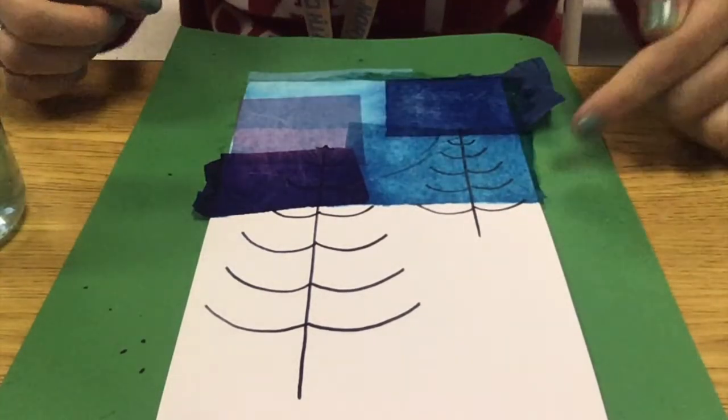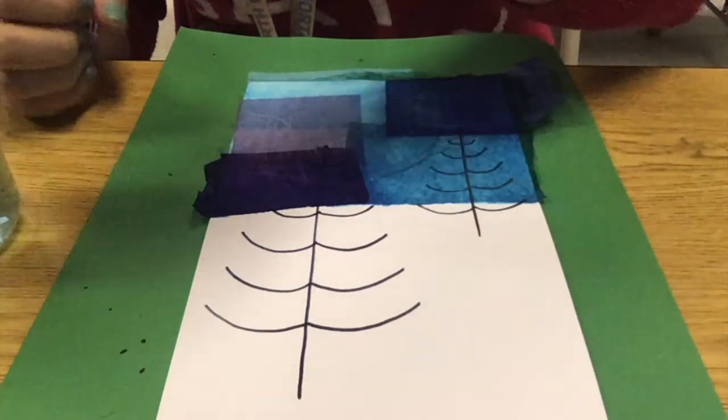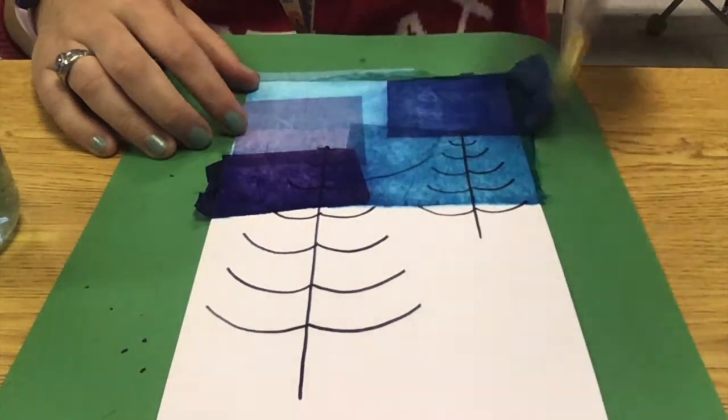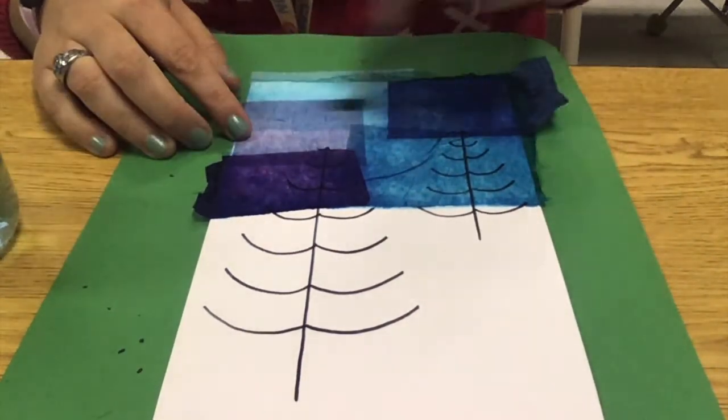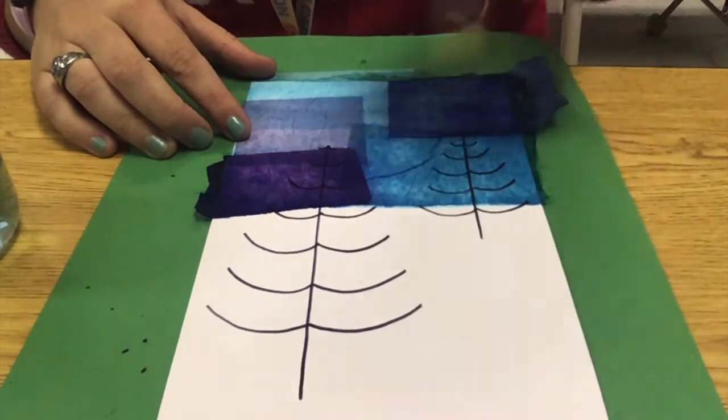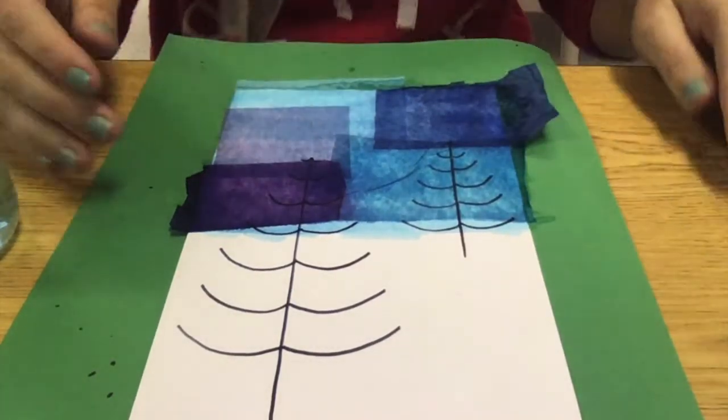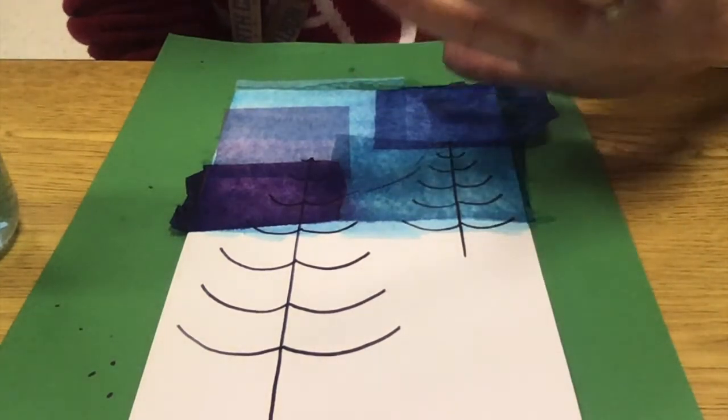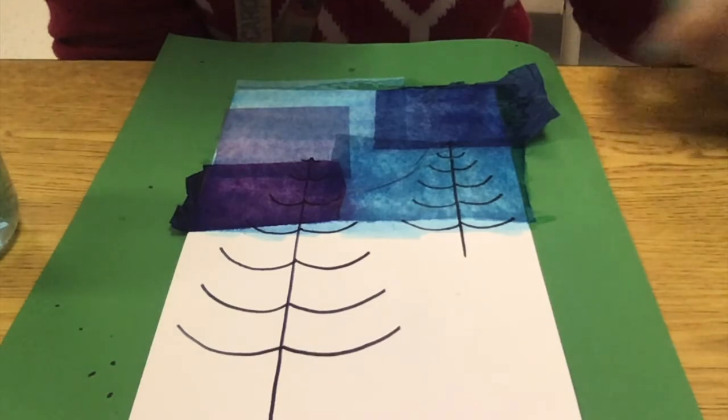So once I have about halfway up, I'm going to take my brush and I'm going to very quickly go over top of that tissue paper again with a coating of water. Now that we have that done, we're going to wait. I have to let this dry for at least five minutes, five minutes guys. And then once it's dry, you can peel off the paper.